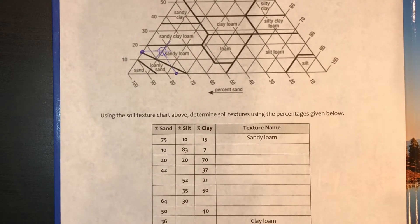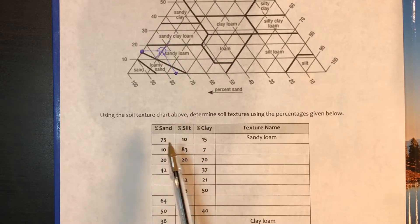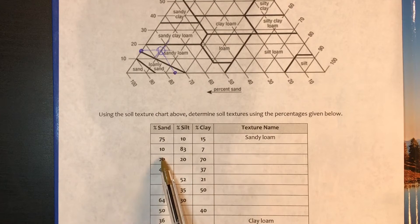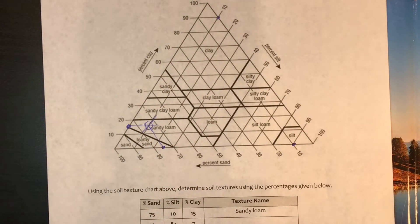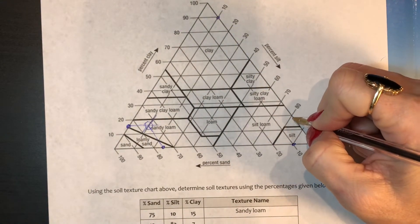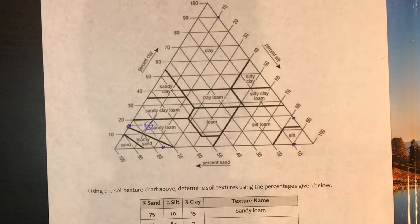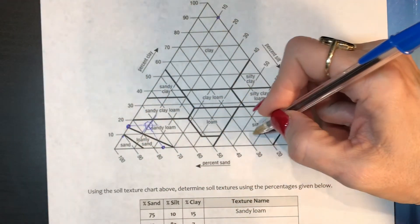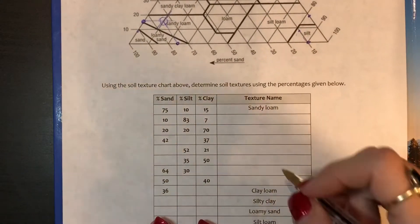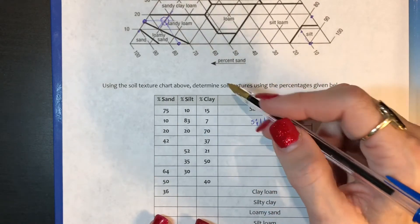Let's go ahead and look at the next one. You have 10, 83 and 7. 10% sand is going to be right here. 83% silt is going to be right here, and a lot of this is just approximate. And then 7% clay. So where do these three things meet? You have this line going this way, this line going this way, and this line coming all the way across, which means that you meet up in silt. So this is called silt.